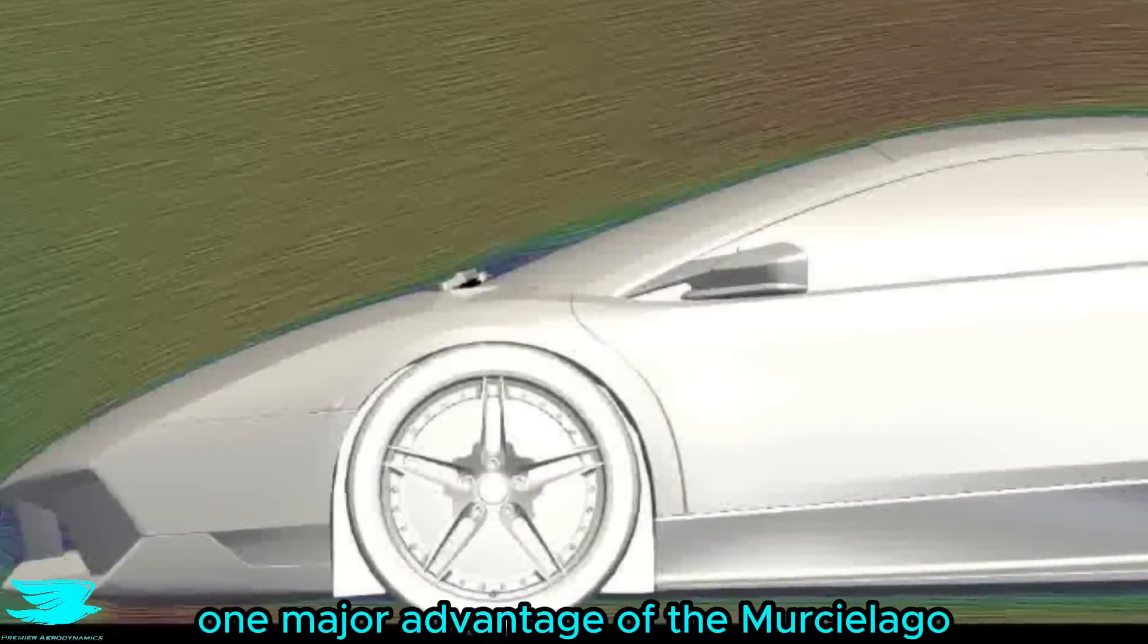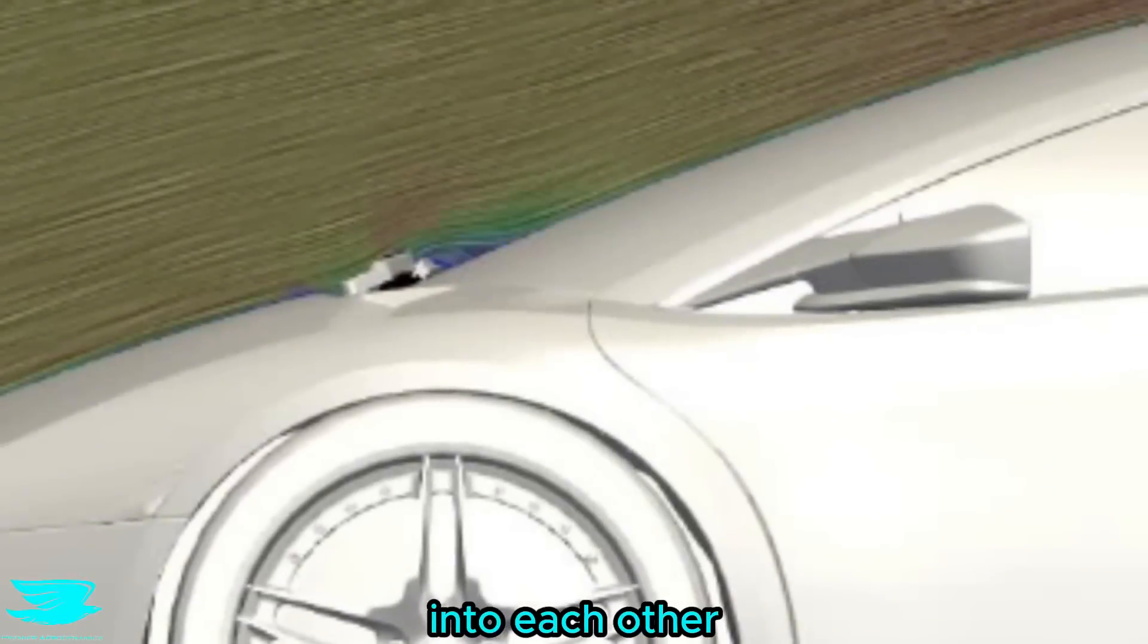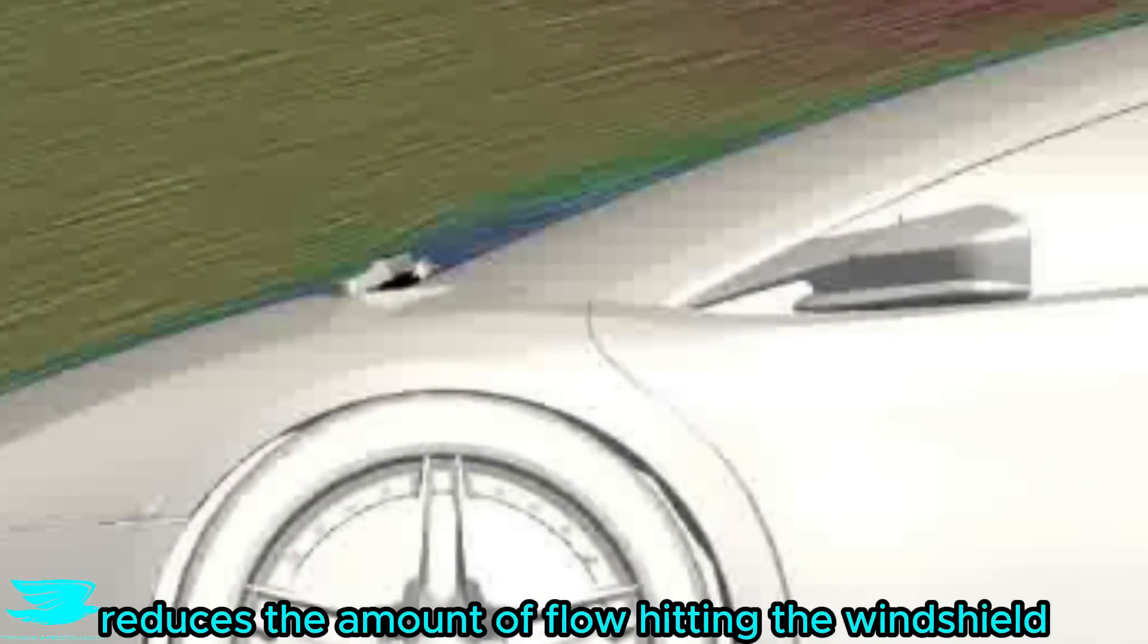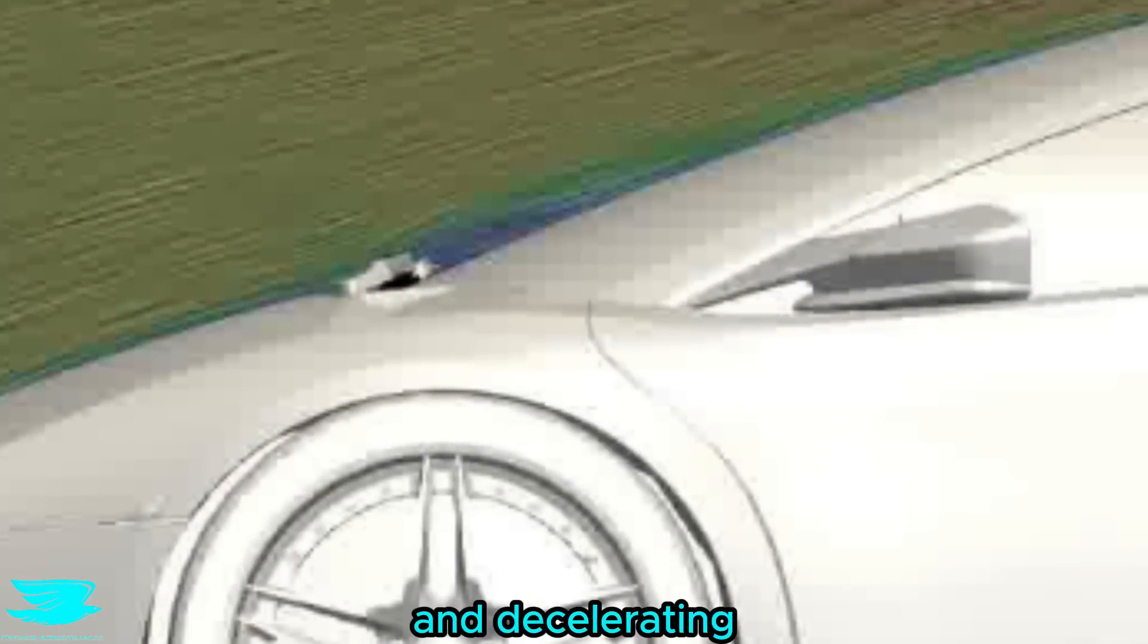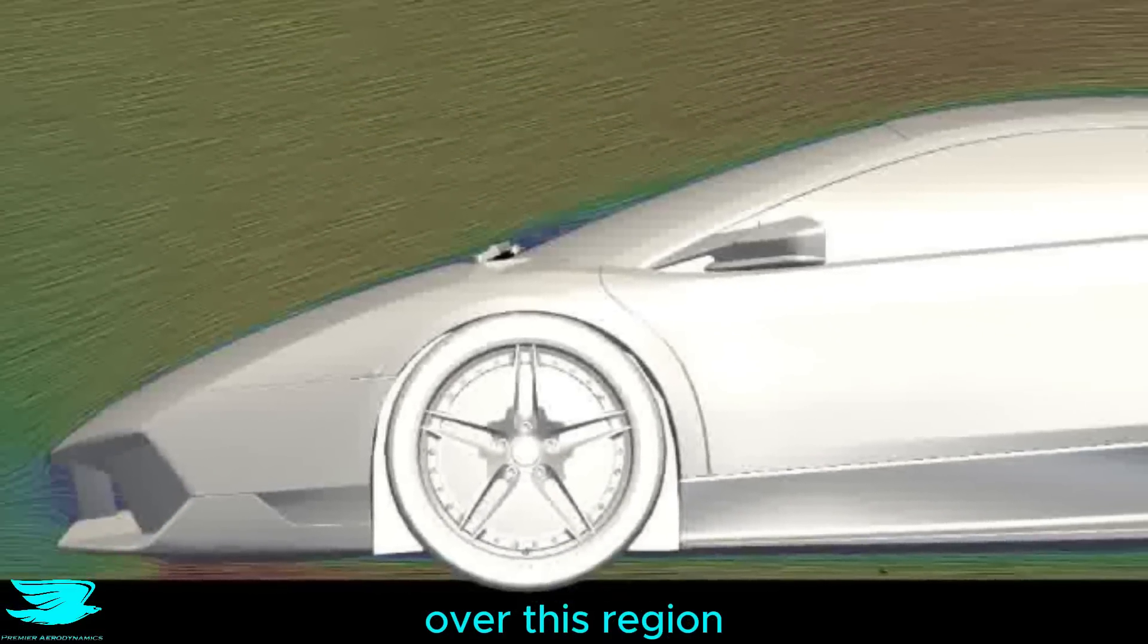One major advantage of the Murciélago is that the hood and the windshield almost perfectly blend together into each other. That reduces the separation at the intersection, and hence reduces the amount of flow hitting the windshield and decelerating. All of that reduces drag. You can just see how well behaved the flow is over this region.